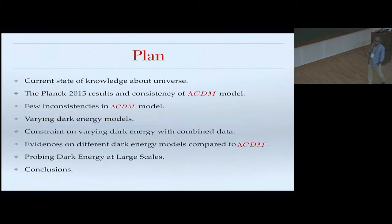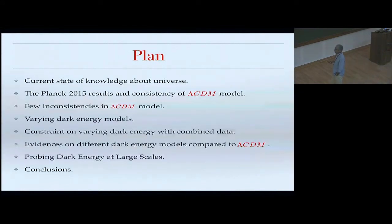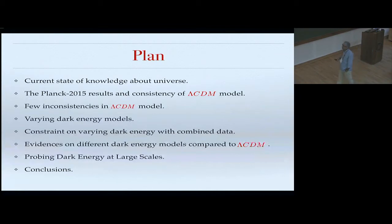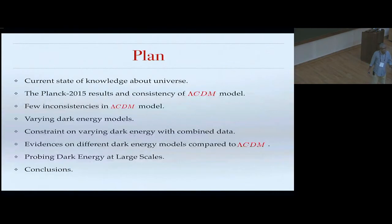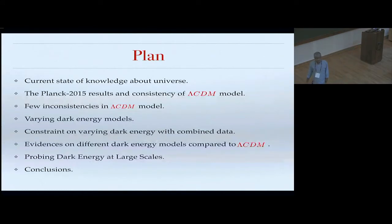This is the basic plan. I'll quickly summarize the current state of knowledge after Planck 2015, where Lambda CDM is quite consistent with the Planck data. Then I'll talk about a few inconsistencies and recent low redshift observations that point to varying dark energy models. I'll then discuss the latest low redshift observations together with Planck and supernova data, computing Bayesian evidences of around 22 dark energy models. Finally, I'll talk about future prospects probing dark energy at very large scales with experiments like SKA or Euclid.